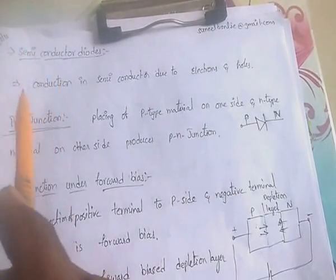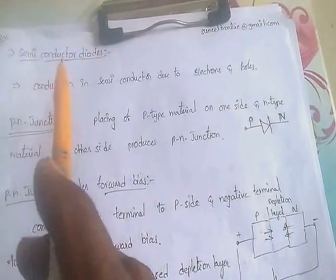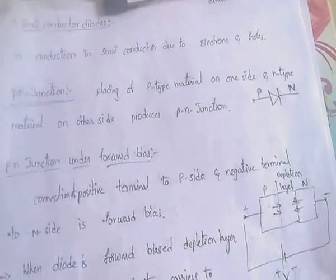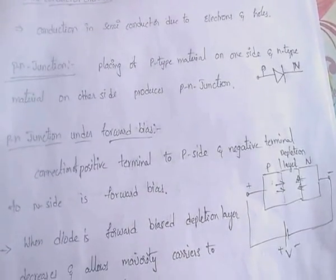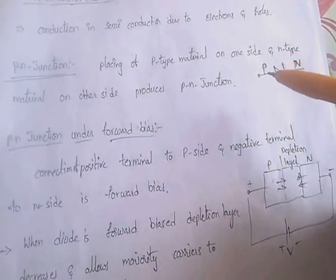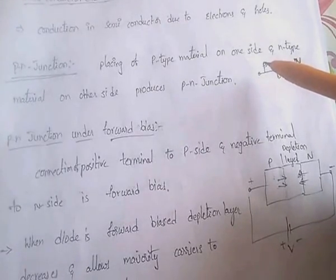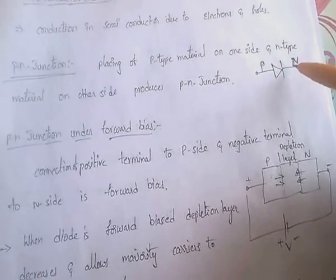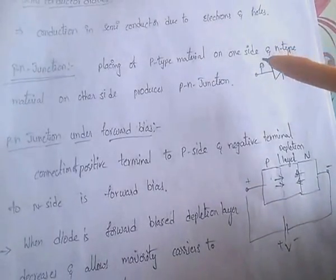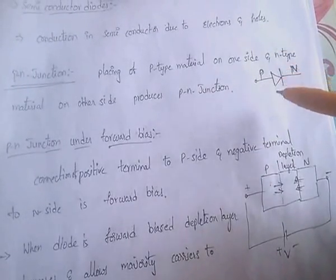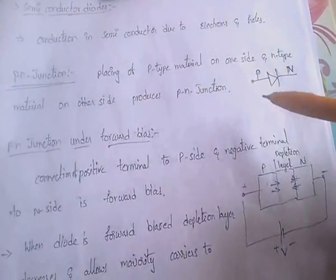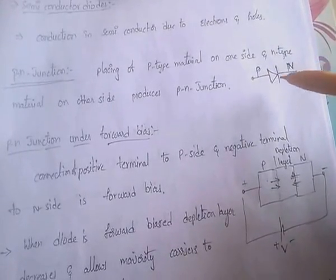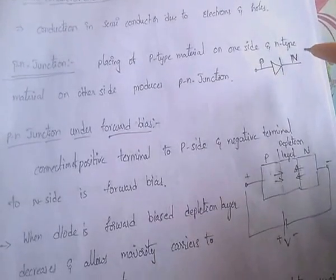Conduction in the semiconductor is due to both electrons and holes. Coming to PN Junction Diode: when we place one type as P-type terminal and another type as N-type terminal, it forms a PN junction, and this diode is called PN junction diode.